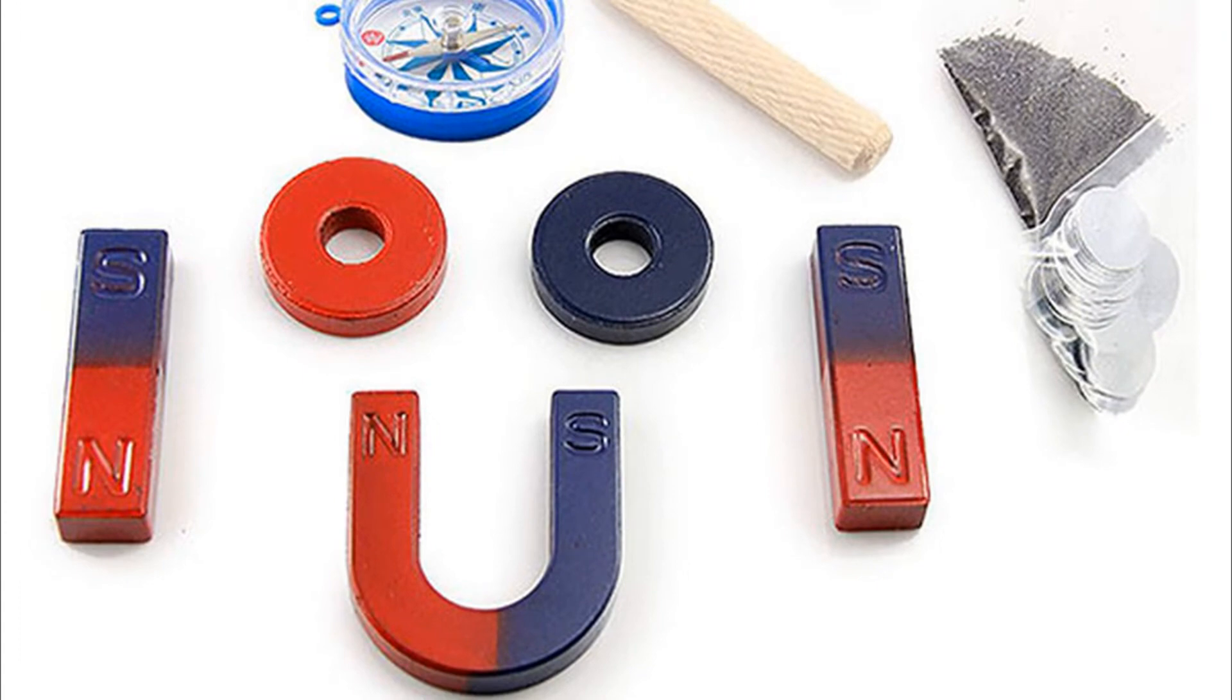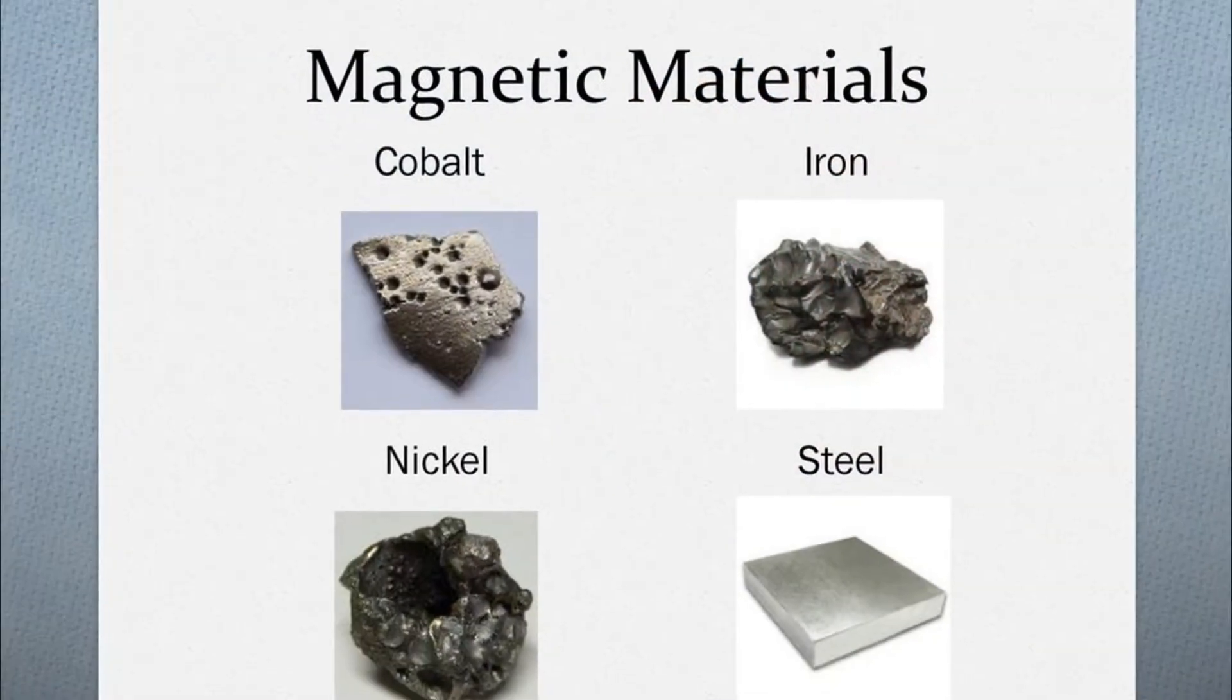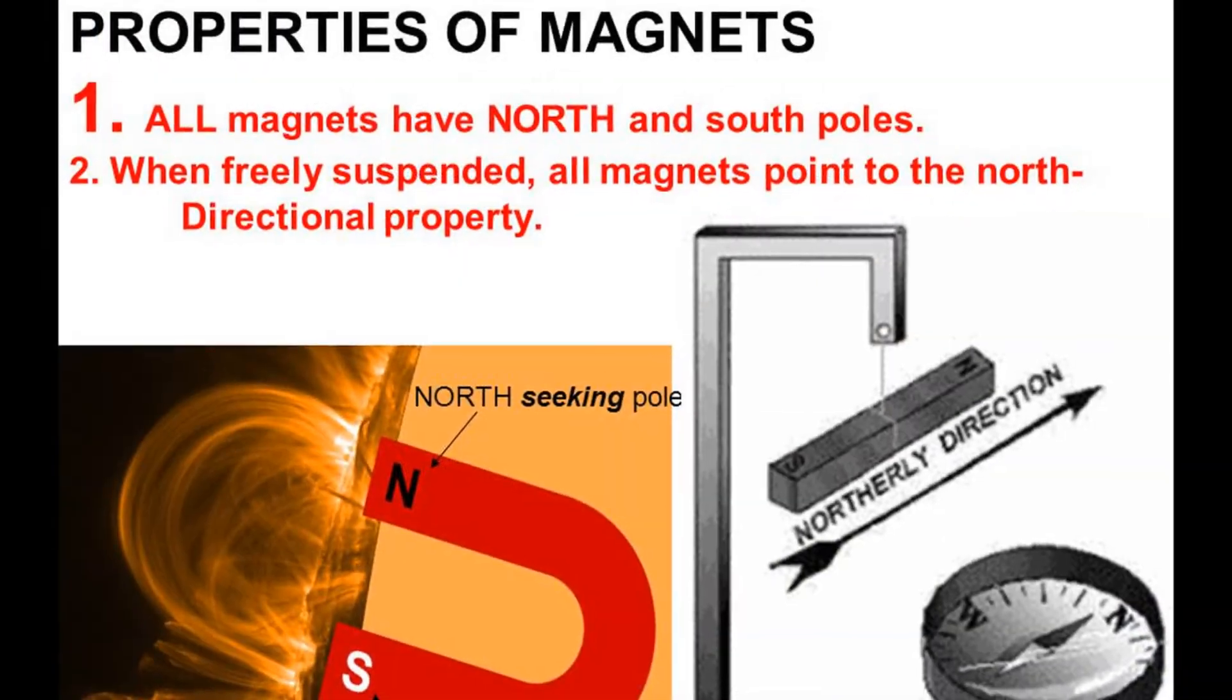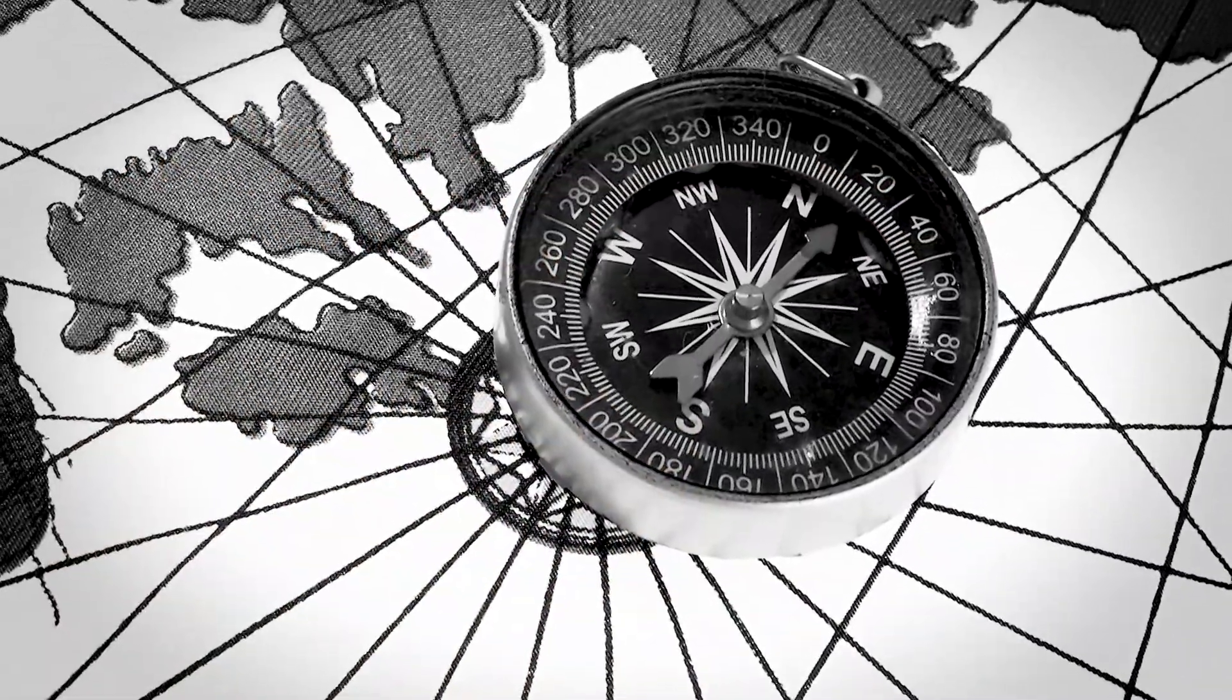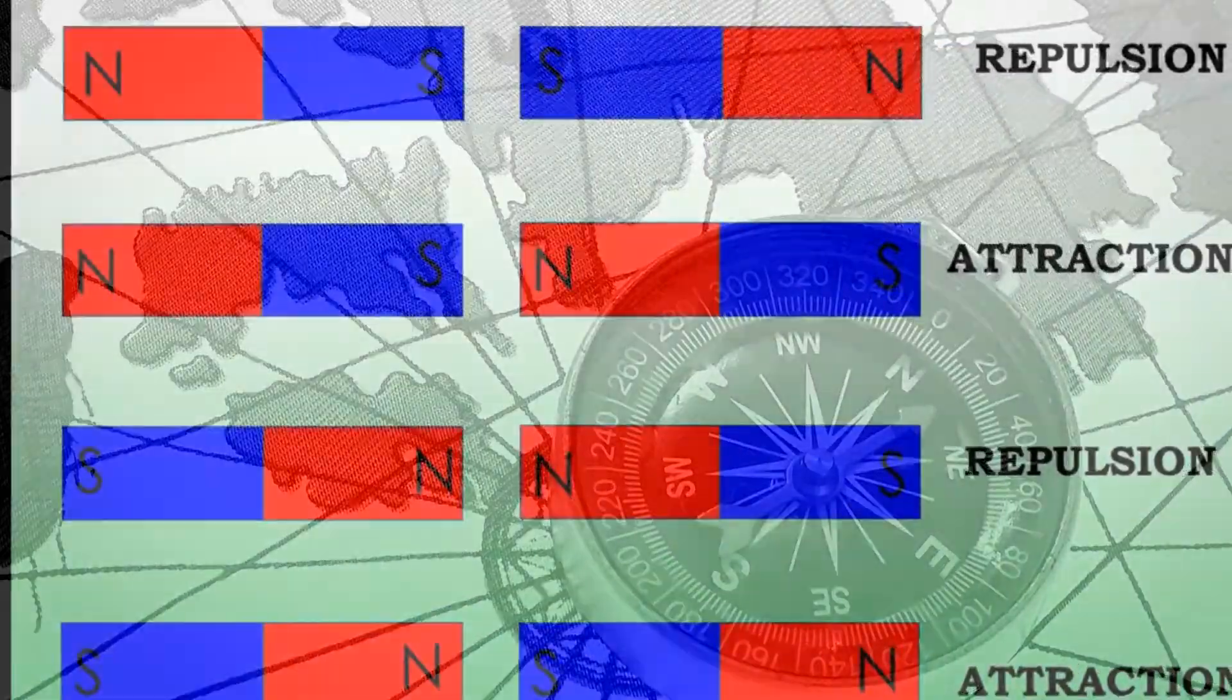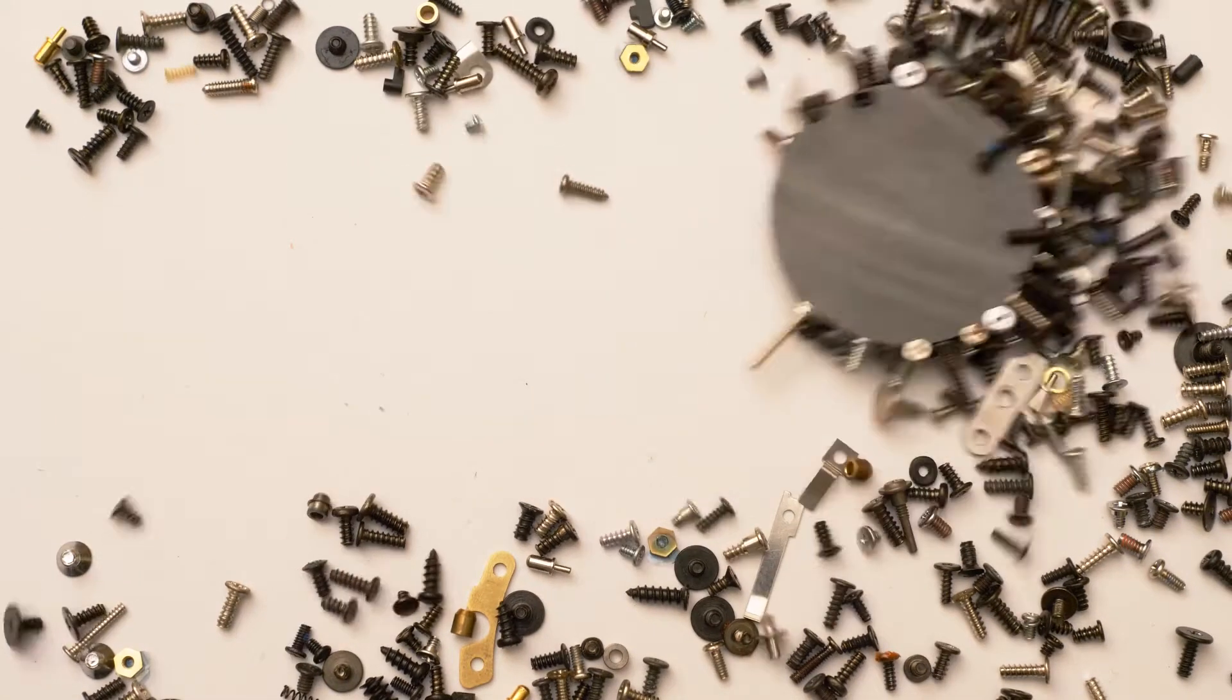Properties of magnets. The four main properties of a magnet are as under. Attractive property: Magnets attract metals like iron, steel, nickel and cobalt. Directive property: A freely suspended magnet always points in the north-south direction. Like poles repel and unlike poles attract. Poles exist in pairs.